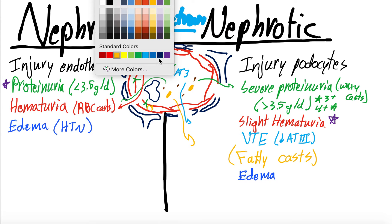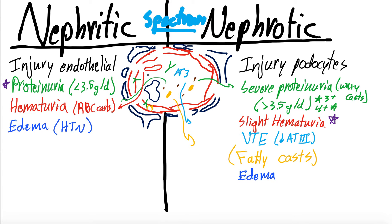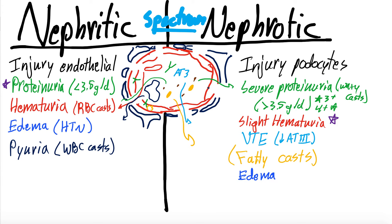In nephritic syndrome, an immune reaction attacks the endothelial cells, attracting white blood cells. With the endothelial injury, those white blood cells leak out into Bowman's capsule and into the nephron, being excreted in the urine. This gives you pyuria — white blood cells in the urine — which also produces white blood cell casts, similar to red blood cell casts. You don't tend to get pyuria in nephrotic syndrome.